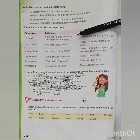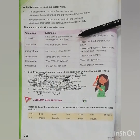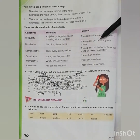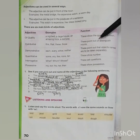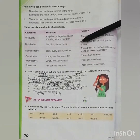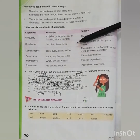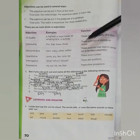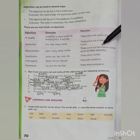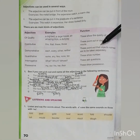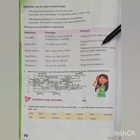Then there comes distributive adjectives: this, that, these, those — these point out or distinguish nouns. Then there comes demonstrative adjectives: each, every, either, neither — these point out that objects are meant to be taken separately.